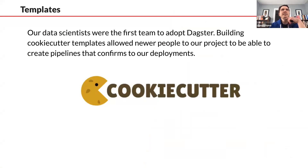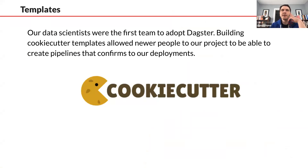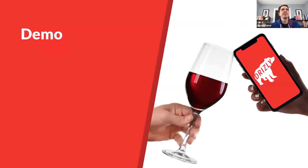One thing holding this all together is that our data scientists have put together some nice cookie cutter templates. This allows us to easily spin up new pipelines that adhere to our deployments, making it easier for people to quickly get a pipeline off the ground without worrying about all the infrastructure in the back — you can just focus on the logic of your pipeline.